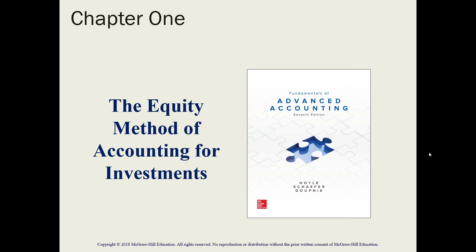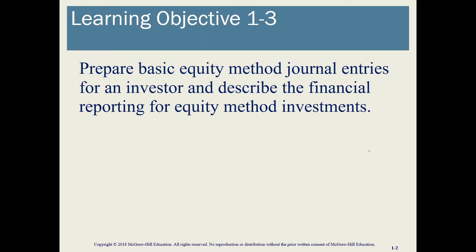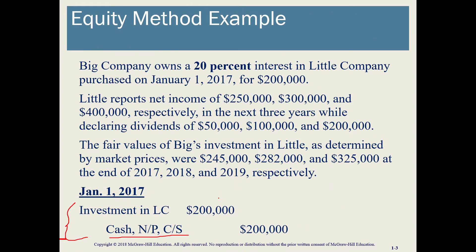Hello everyone. Continuing on with the equity method, we're looking at objective number three. We're going to take a look at the journal entries under this method. We'll use Big Company and Little Company as our example. Big Company purchased a 20% interest in Little Company on January 1, 2017 for $200,000. On Big Company's books, we are going to do a journal entry on January 1, 2017 to record this investment.